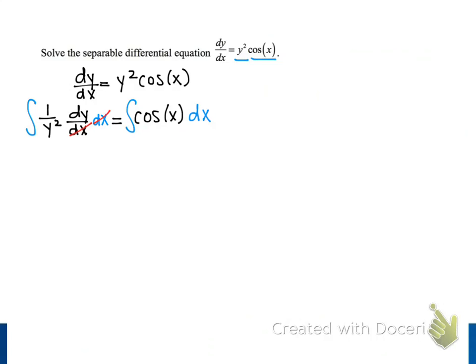For the integral on the left, we can use the power rule to integrate 1 over y squared. You might find it helpful to think of the integrand as y to the negative 2 power if you are using the power rule. And the result is negative 1 over y.